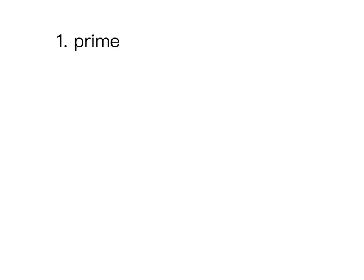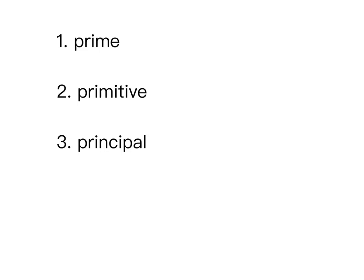这边六个单字复习：primary有首要的意思，primitive是原始的，principal是主要的重要的，priority是优先，prioritize是排列优先顺序，prime是最初的精华的。随机抽四个：prime、primitive、principal、priority，一格25分，这是第四轮。